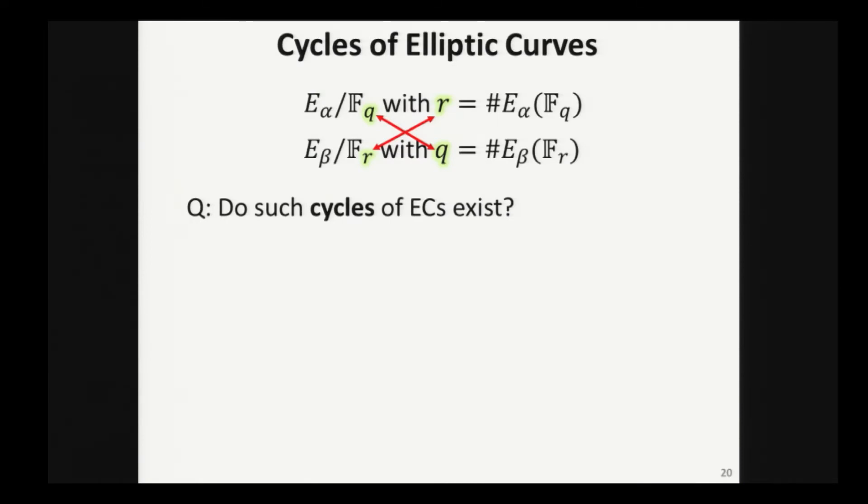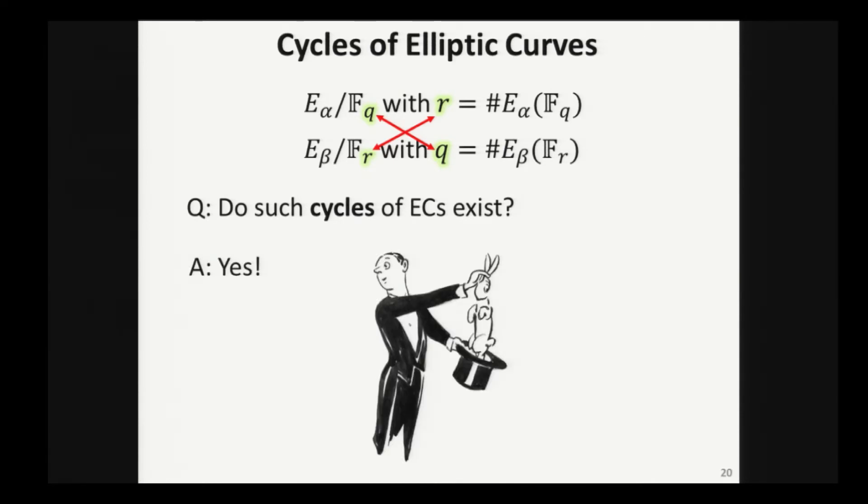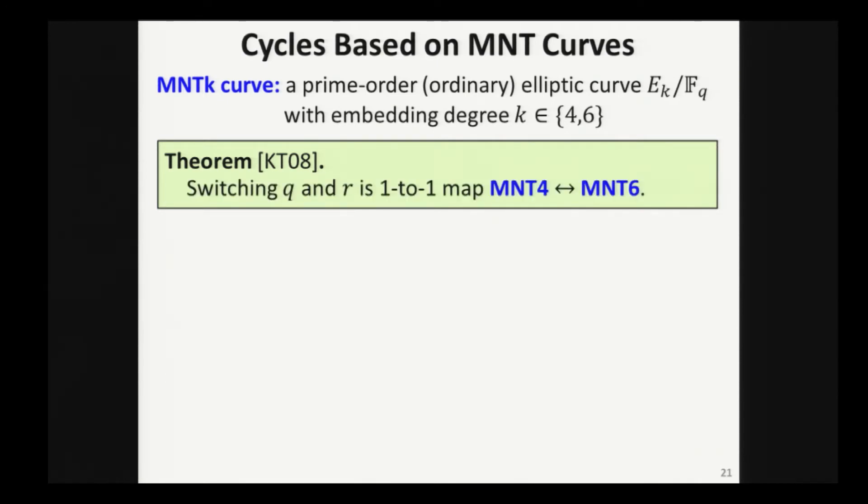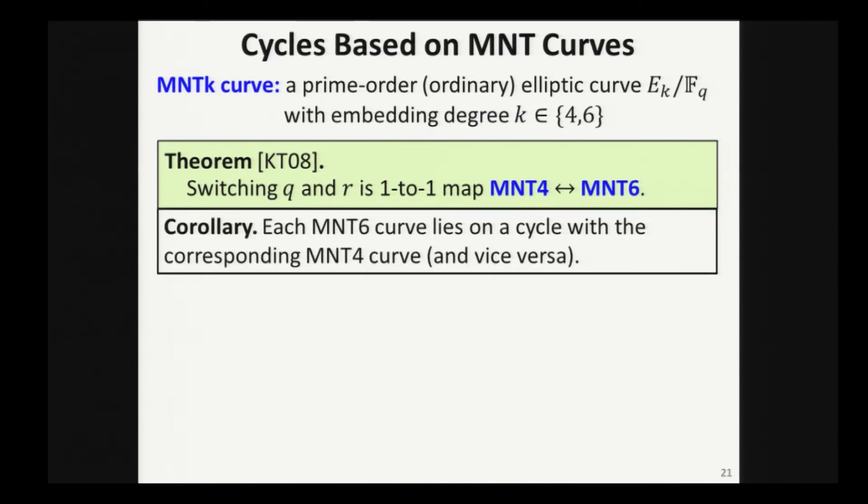But all of this crucially relies on the fact that we actually have these cycles of elliptic curves, and do they exist? And miraculously, the answer is yes. Specifically, such cycles can be based on so-called MNT curves. What are these? These are just prime order ordinary elliptic curves with prescribed embedding degrees. What's MNT? These are named after their discoverers, Miyaji, Nakabayashi and Takano and the specific fact that we like about these curves is a theorem by Karabina and Teske from a few years ago that says that if you take the parameters Q and R and you switch them that gives you a one-to-one map between MNT curves of embedding degree 4 and MNT curves of embedding degree 6. MNT4, MNT6. This is telling us that each MNT6 curve lies on a cycle with its corresponding MNT4 curve and vice versa. That's excellent, because that's the curves we're looking for.